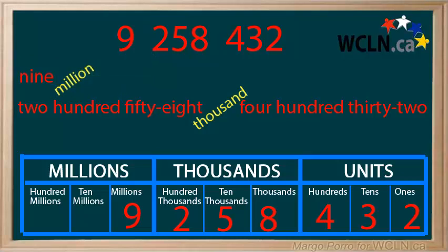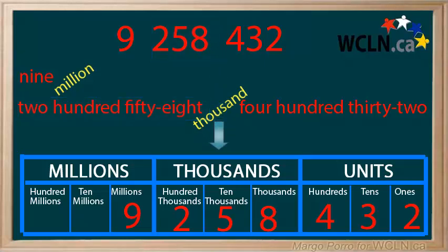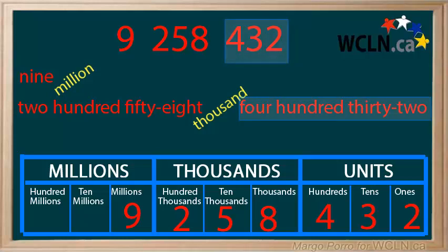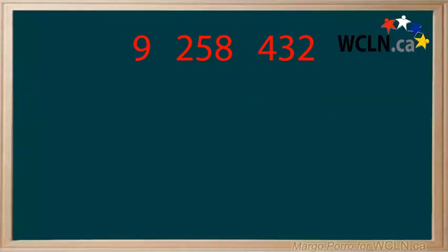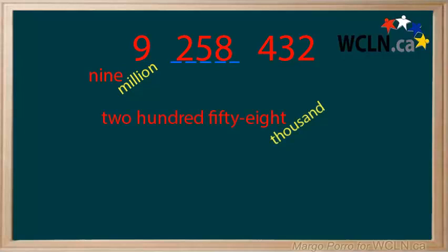Continue as before, saying the next three digits as a group — two hundred fifty-eight — and then adding the period name thousand. Finally, say the last three digits as a group: four hundred thirty-two. Together, this number reads nine million, two hundred fifty-eight thousand, four hundred thirty-two.